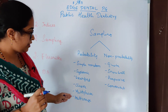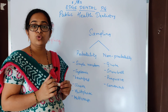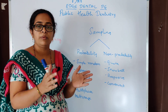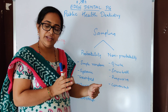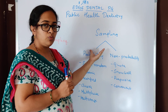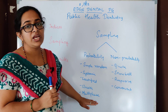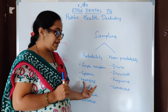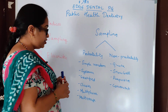Both questions were from probability sampling. One important question was on multi-phase sampling, where an example related to a school was given. The entire school population was screened, then children were classified by disease. Children with caries were further taken for endodontic treatment. Since the sample was progressively narrowed from the whole school to caries patients to those requiring endodontic treatment, this is multi-phase sampling. Another question was related to stratified sampling and randomized controlled trials.